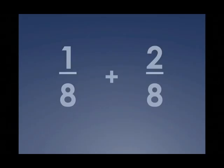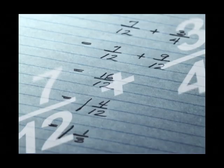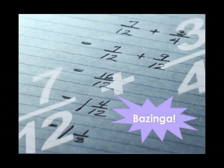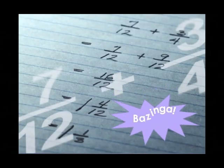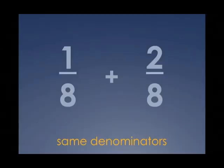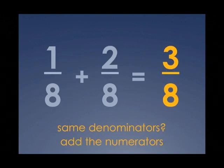One, two — fractions here before you, that's what you see now: fractions. Fractions are here for you. Let's go ahead now. They have the same denominators, so we can add now. Add those — add the numerators. That's how it's done now.